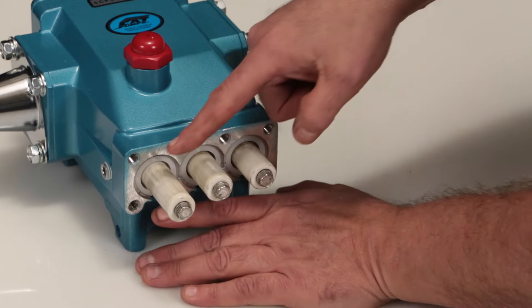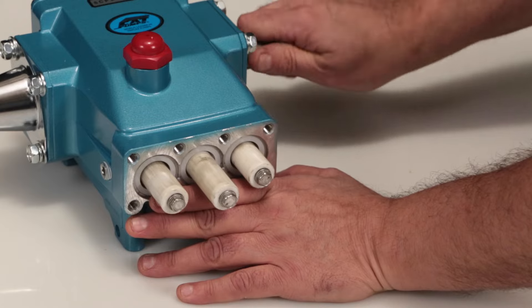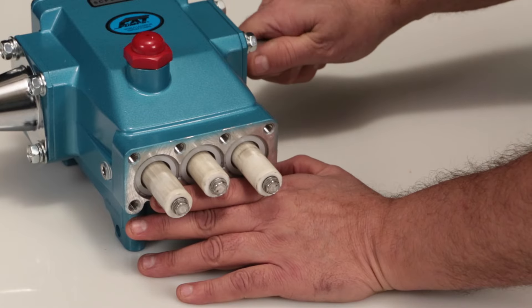Before reinstalling the manifold, rotate the crankshaft so the outside two plungers are even at the furthest distance from the crankcase.